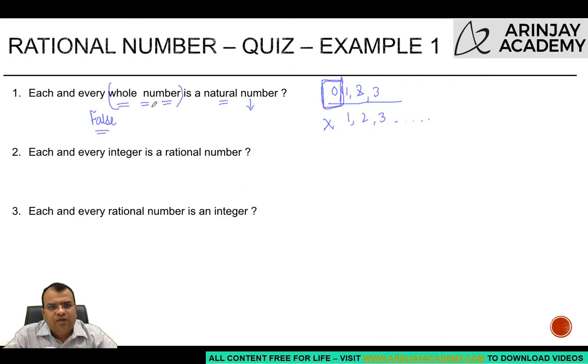However, if the statement was each and every natural number is a whole number, would this be true? Yes, then it would be true. Because all natural numbers are included in whole numbers.